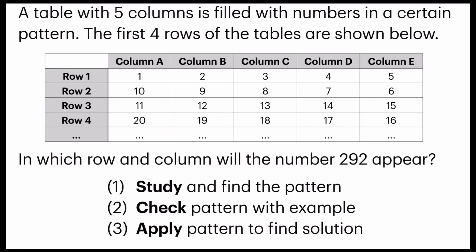Number two, you have to check the pattern with an example. What do I mean by example? That means later on you're going to select any random number from the table itself and you're going to try it with the pattern that you have come up with and you're going to see if it works. If it works, you should get the row and the column as desired. So for example, let's say if I were to pick 15, I should get row 3 and column E. That is the meaning of checking the pattern with example.